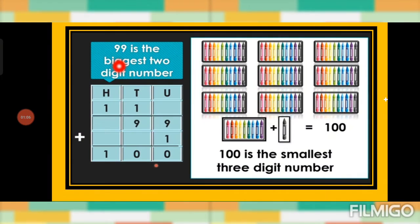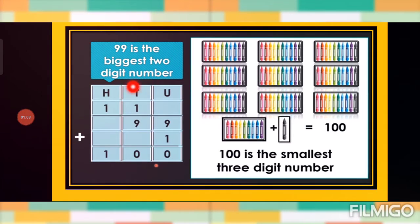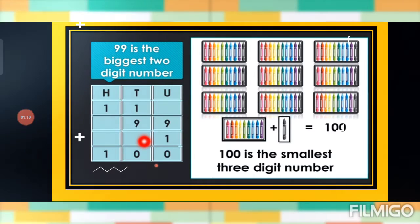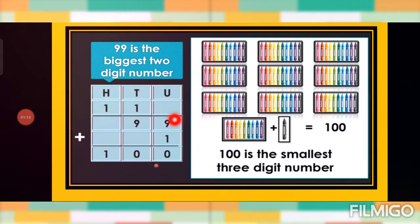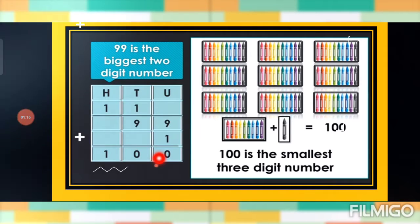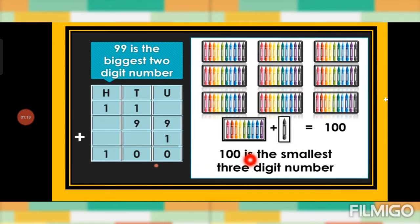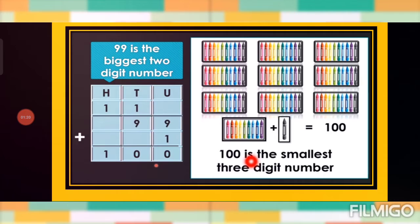99 is the biggest two digit number. So when we add 1 to 99, the total is 100. And 100 is the smallest three digit number.